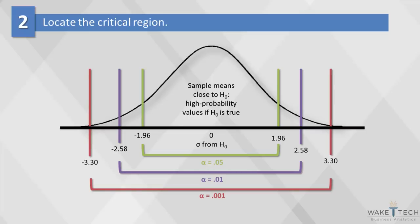In most cases, researchers choose an alpha of 0.05 or 0.01. Our rejection region should have a probability of alpha if the null hypothesis is true, but some bigger probability if the alternative hypothesis is true. So if the mean lies inside the cutoff value for alpha, then the null hypothesis is true; otherwise, we fail to accept the null hypothesis. The result is significant beyond the alpha level.